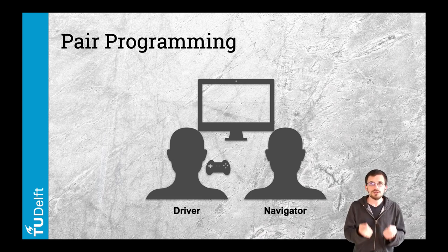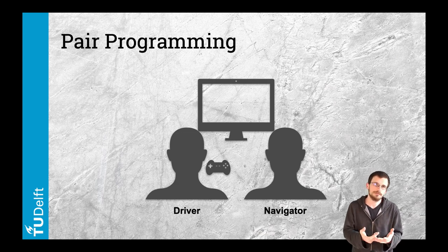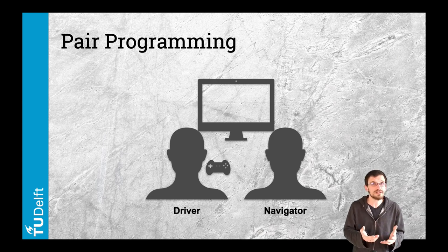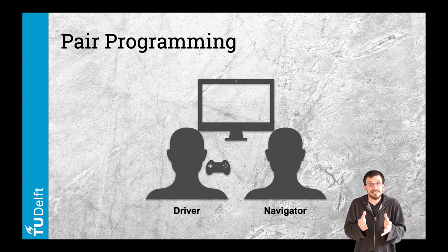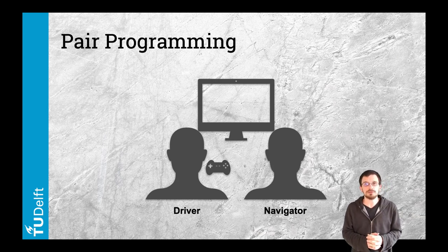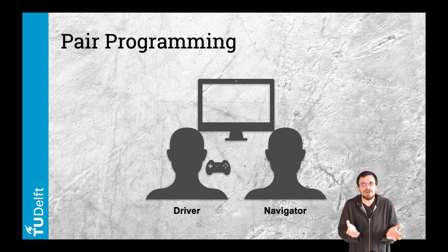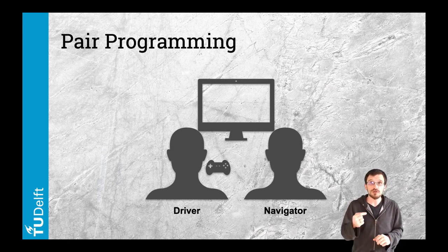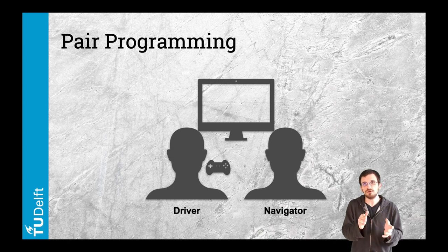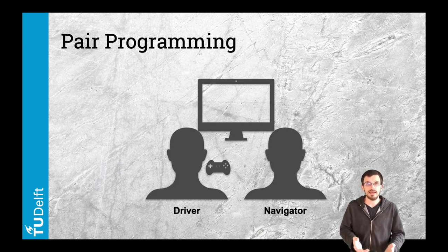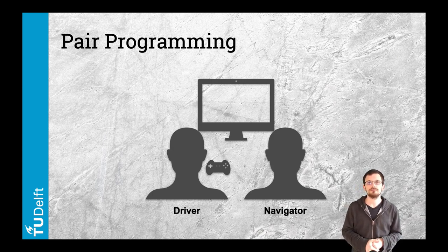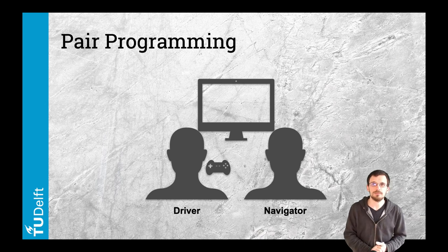Communication is key in this approach, and both driver and navigator should continuously talk about the task at hand. It is important to switch roles regularly while sticking rigorously to the roles for the given period — for instance, the navigator should not touch the keyboard. There is no strong evidence of getting tasks done faster with pair programming, but the code quality, shared knowledge, and social environment are greatly improved.